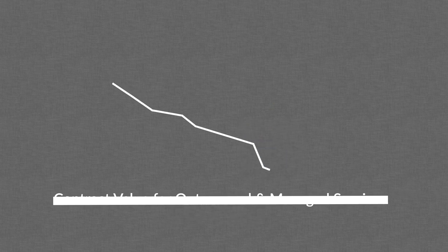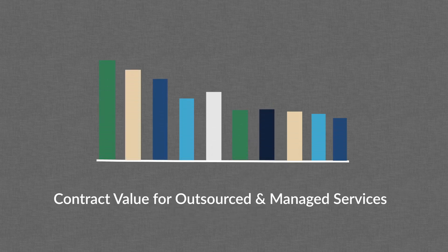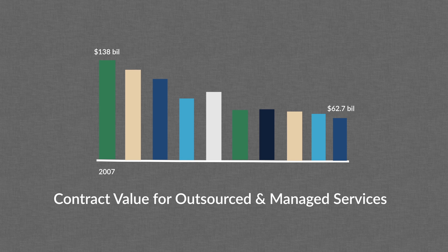Meanwhile, the total contract value for outsourced and managed services has declined from $138 billion in 2007 to just $62.7 billion in 2017.